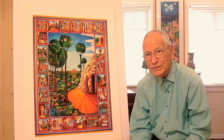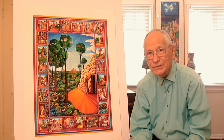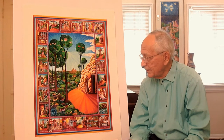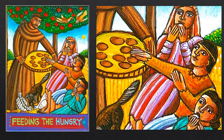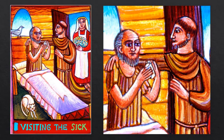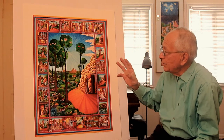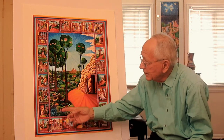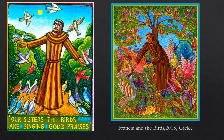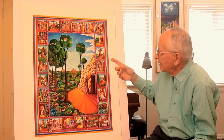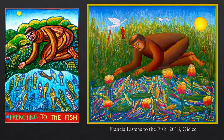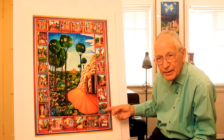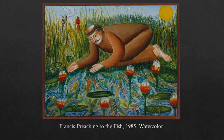I liked that idea that there are possibilities for peace and not always going to violence or war. I also showed how he cared for people in need — you'll see scenes like Francis welcoming the homeless, Francis feeding the hungry, and Francis visiting the sick. Some of these I went on to create bigger works from, like Francis and the Birds, Francis and the Wolf, and also Francis and the Fish. That image I did first as a small watercolor after the drawings, to see what would be possible.